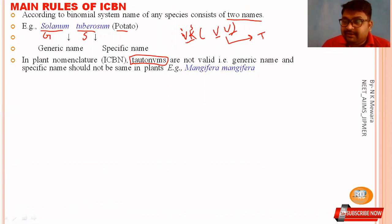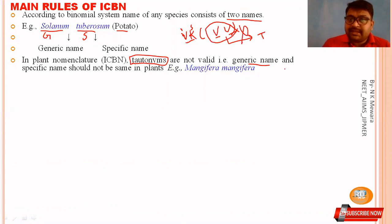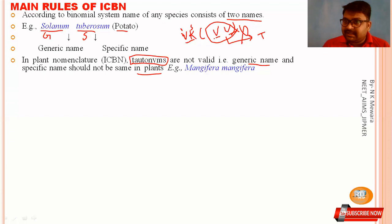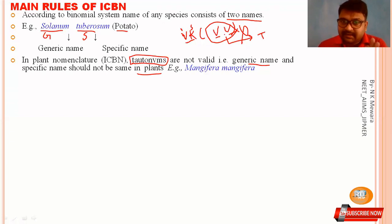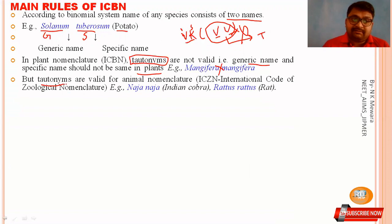Tautonyms are not valid in plants. The generic name and specific name must not be the same for plants. However, if you talk about animals under ICZN (International Code of Zoological Nomenclature), tautonyms are valid.